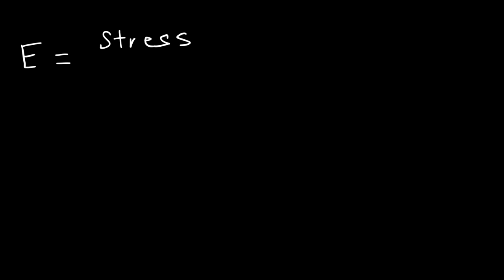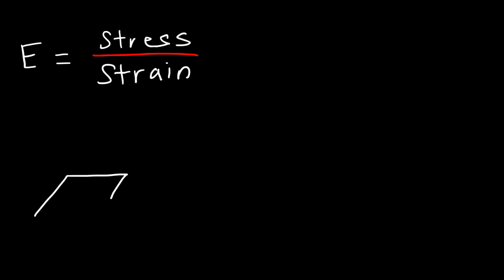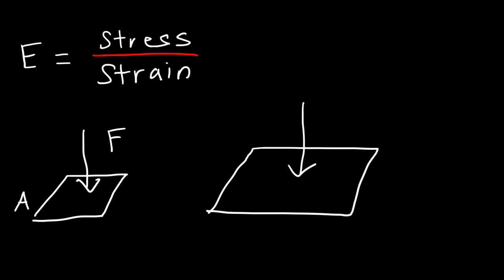If we divide stress by strain, we get something known as the elastic modulus, also known as Young's modulus. Some textbooks might use Y instead of E. It's the ratio between stress and strain. Stress is something applied to the solid by external forces. If you apply a force over a small area, there's going to be a lot of stress applied to the material. However, if you apply the same force over a larger area, then the stress applied to the material is much less.